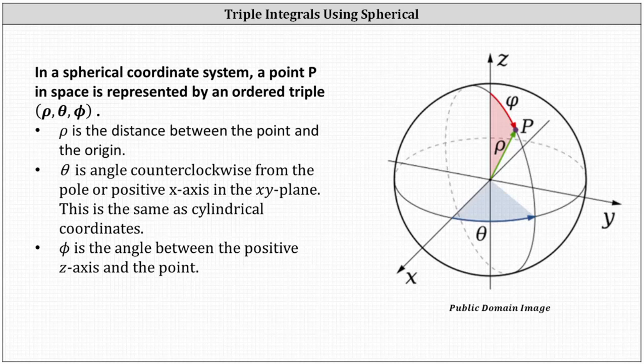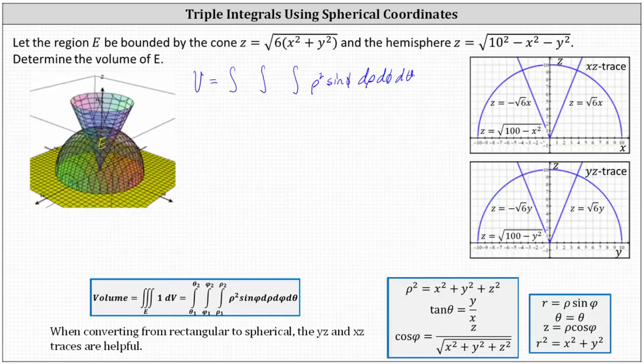Going back to our work, we begin by determining the limits of integration for rho. Looking at the x,z trace, rho starts at zero and goes out to the hemisphere, which has a radius of 10. The limits of integration for rho are from zero to 10.